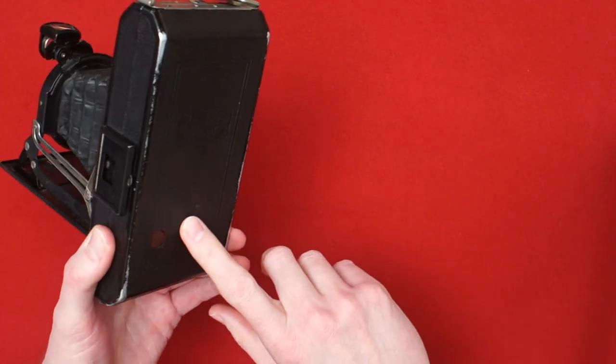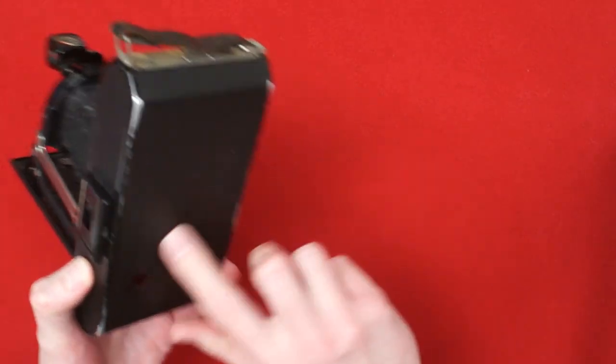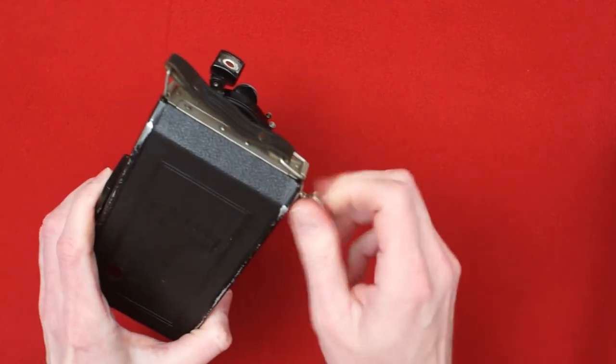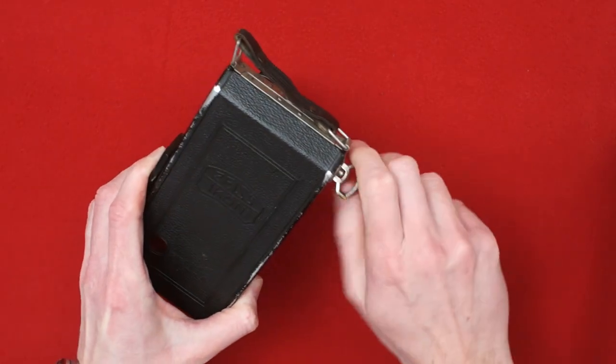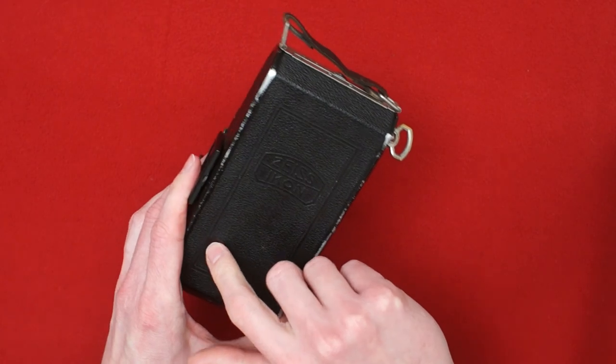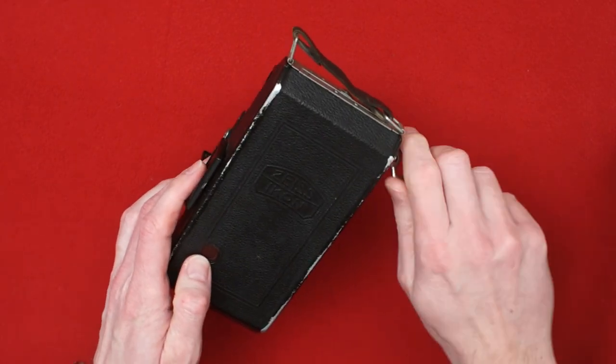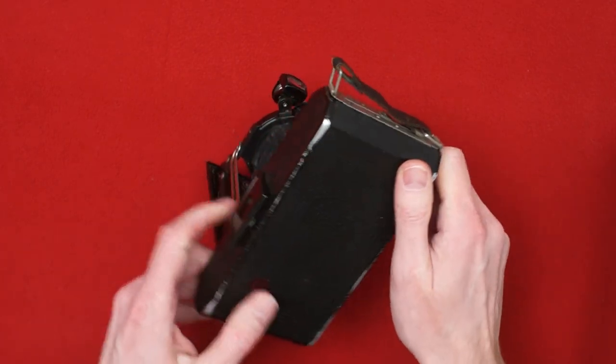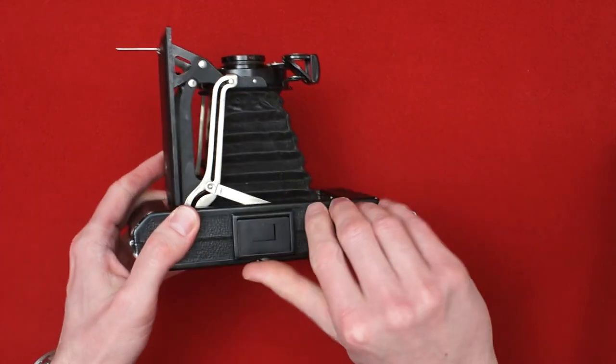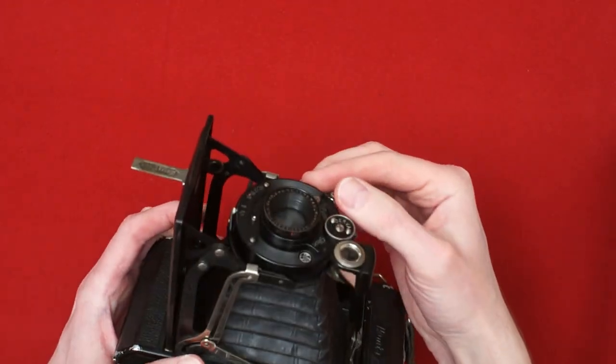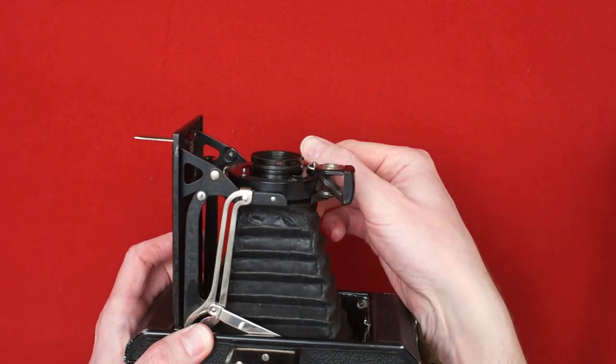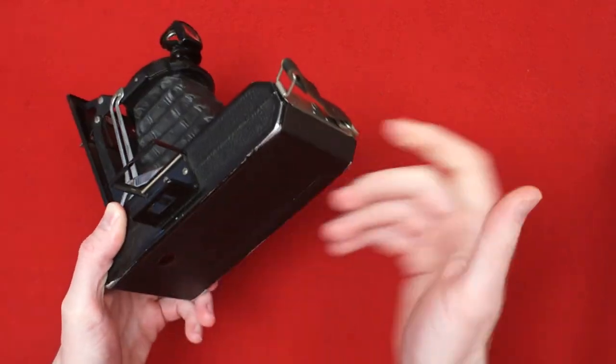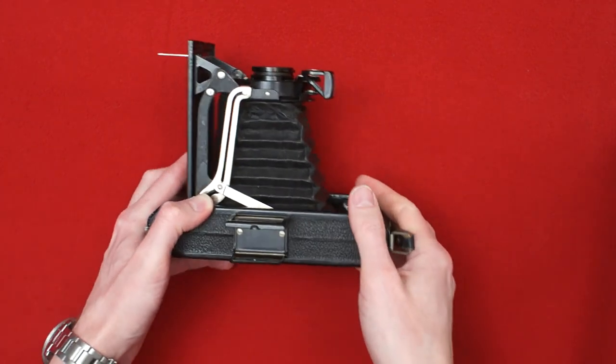It takes 120 film. There is no double exposure prevention, just red window. You advance the film by turning this key here. Keep an eye on the numbers in the window. Advance the film until you see the next number in the window. Compose your shot, push the shutter. And if you forget to advance the film, if you push the shutter again you will have a double exposure.